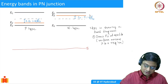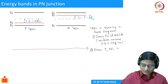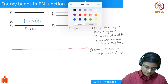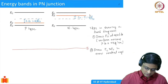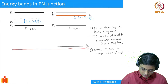Step 1: Draw Ef at equilibrium — it is uniform across the p and n regions at equilibrium. Step 2: Draw Ec and Ev in the quasi-neutral regions, which are the regions away from the junction. On the n-side, the Fermi level is closer to Ec, so I draw Ec with a band gap below it and then Ev.